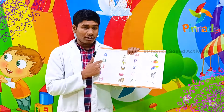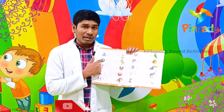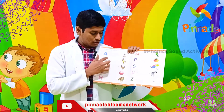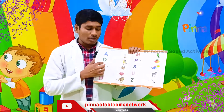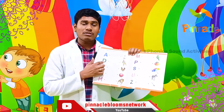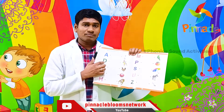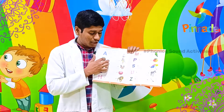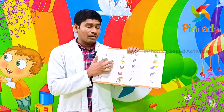Next is the letter D. The phonics sound is D, and the picture shown is Dog. That is how you will understand the phonics concept.